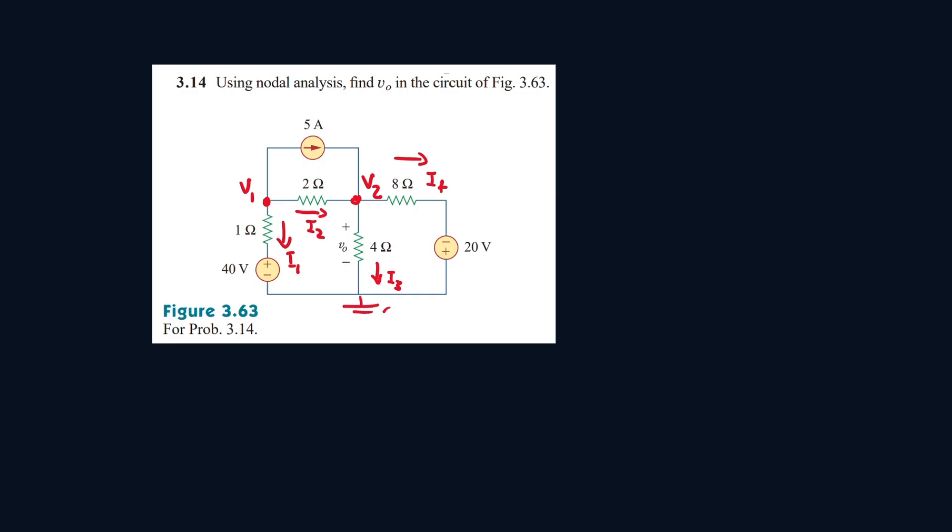And let's write a few current directions. Let's call this I1, I2, I3, and I4. Okay, and this is the ground node, so it's 0 volts here. So let's write the equation for node V1. Everything is leaving it, so it will be I1 plus I2 equals 5 amps.